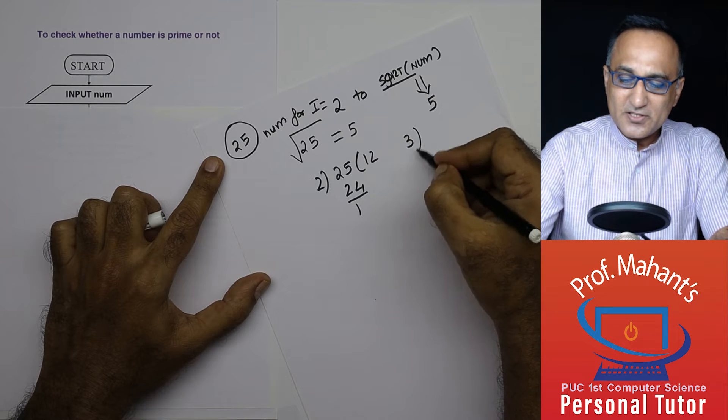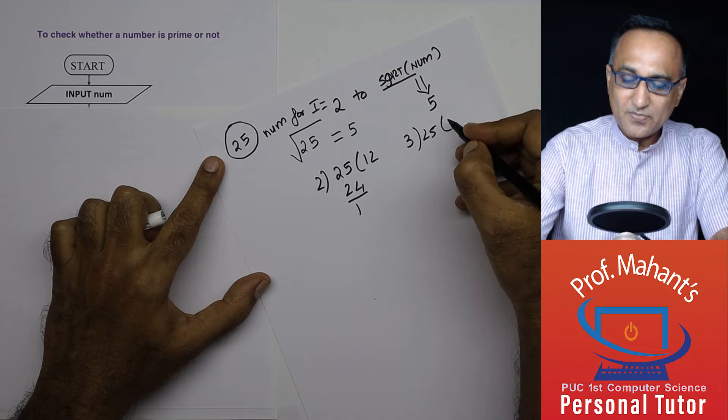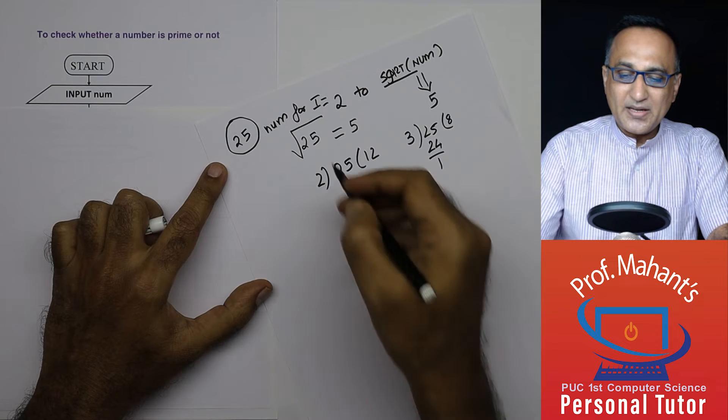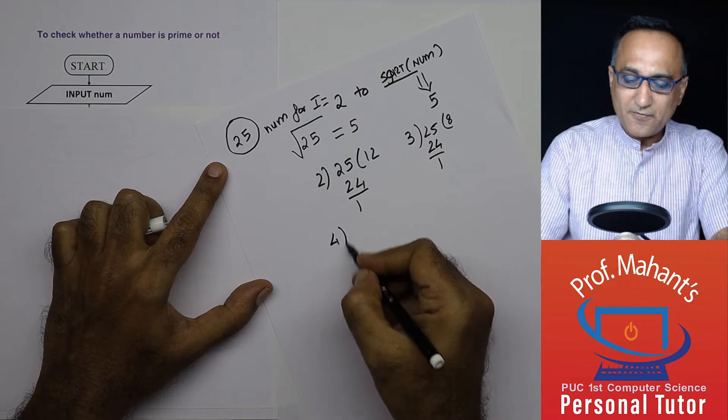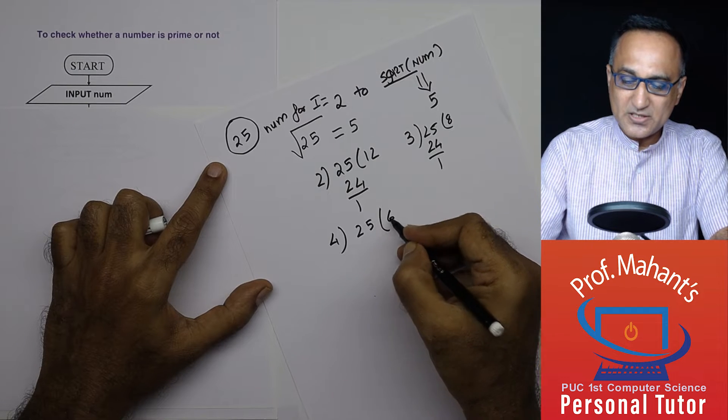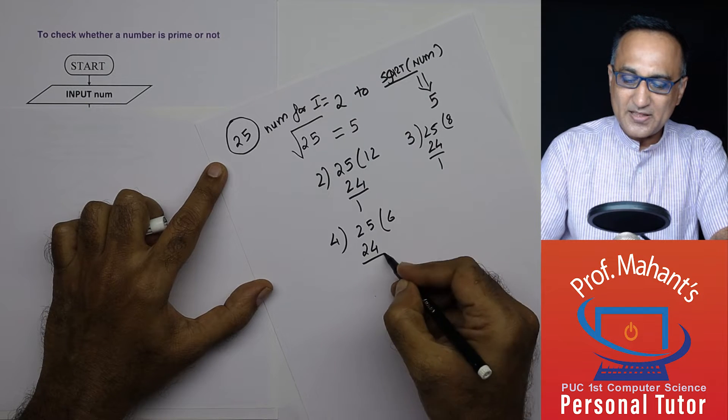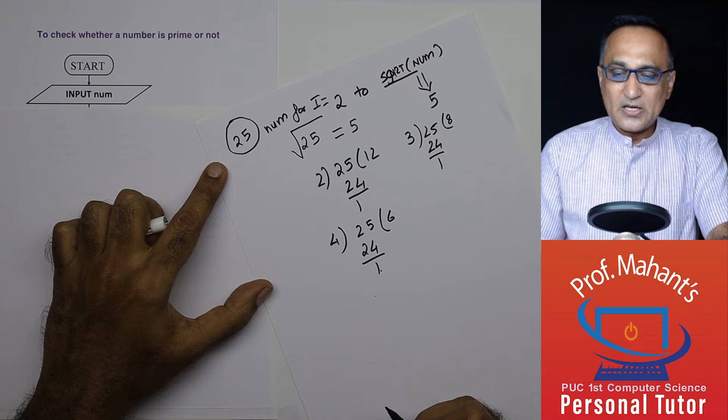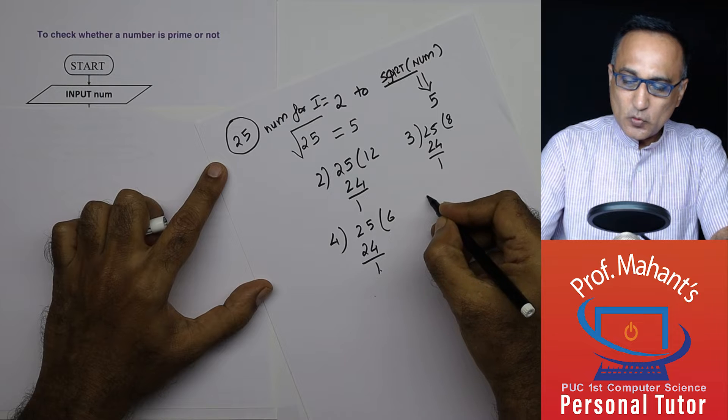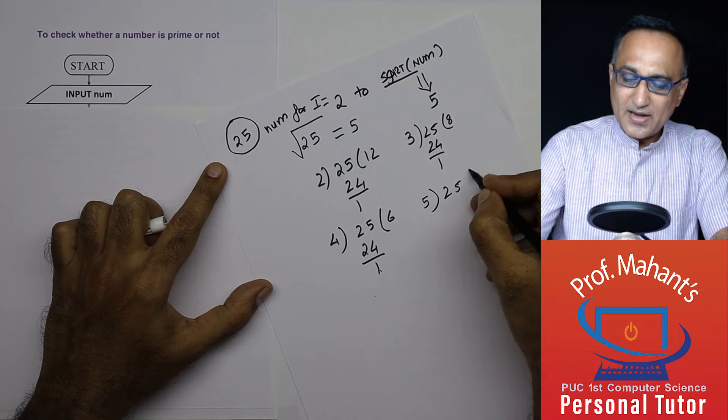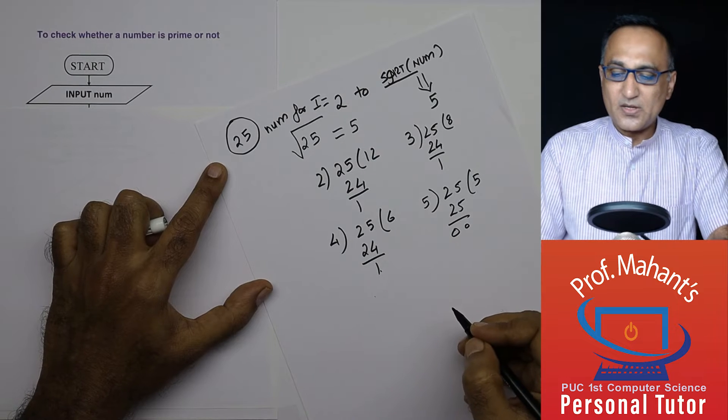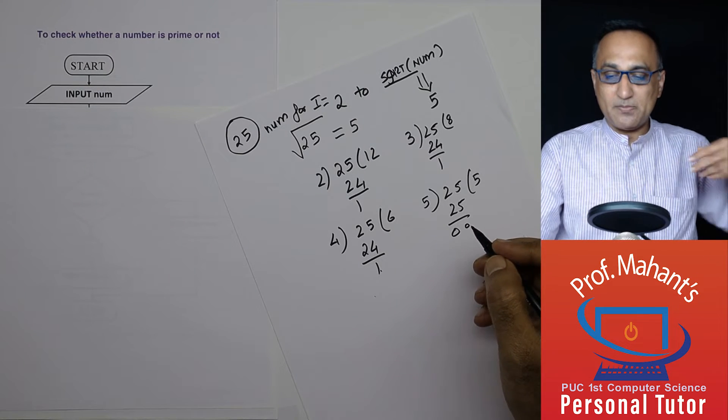25, if it is divisible by 3, it becomes again the remainder is 1. Now I increase i by 1, i becomes 4. 4, 5s are 4, 6s are 24, again the remainder is 1. Now i at next point ends up becoming 5. So when I take 25 and divide it by 5, the remainder happens to be 0. So therefore 25 cannot be a prime number.